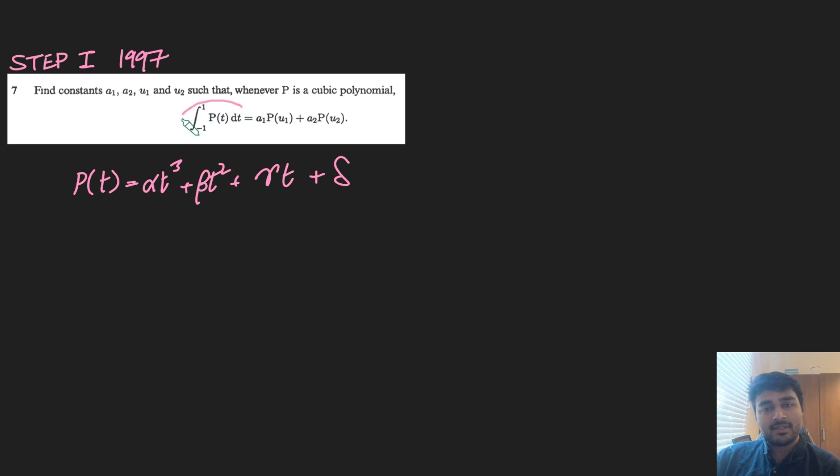such that when I substitute that into this left-hand side, it equals this right-hand side, where all I need are these constants a1, u1, a2, and u2. So the most intuitive thing to do is I'll just sub this into the left-hand side, so the integral from minus 1 to 1 of p(t) dt.